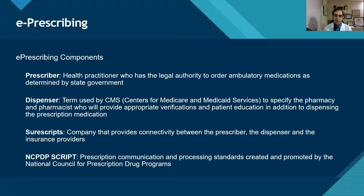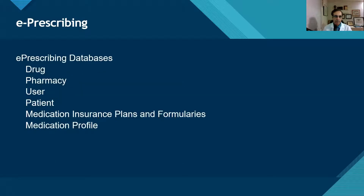So what are the components of e-prescribing? We have a prescriber, a dispenser, and then this company called SureScripts, which is an intermediary in terms of connectivity. Then we have an interface standard — we talked about HL7 in the past, but this is more for e-prescribing and it's called NCPDP Script, which stands for National Council for Prescription Drug Programs. This is the standard that they have, and we've talked about the importance of building databases and the pharmacist informaticist being involved intimately with building the drug databases and other large files used in our systems.